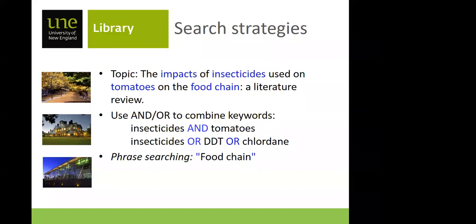Phrase searching is very important — one of the most powerful types of search you can do. If you want to look for 'food chain,' putting in 'food AND chain' can still return completely irrelevant results. But if you put them in inverted commas, it will only find those two words together as a phrase. That's a very powerful tool — it will cut your search down straight away to exactly what you need. If you put in 'food AND chain' you could get a hundred thousand articles; if you put 'food chain' in quotes that could cut it down to a thousand or less.